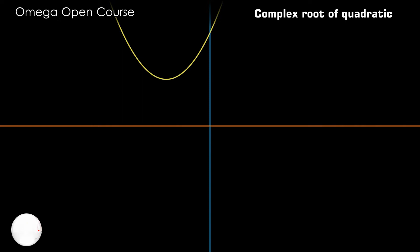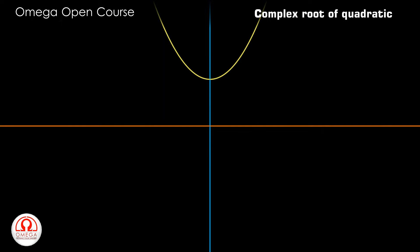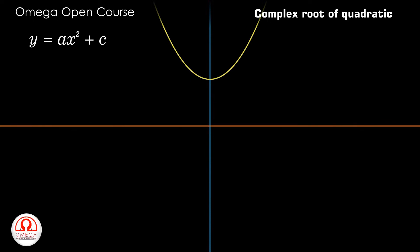Have you ever wondered how you can find the complex root of a quadratic expression just from its graph? To understand how to do that, let's start with a quadratic expression whose graph is as shown. You will get such a graph for the quadratic expression y = ax² + c, where a and c are both positive real numbers. In such a case, the graph intersects the y-axis at distance c above the origin.